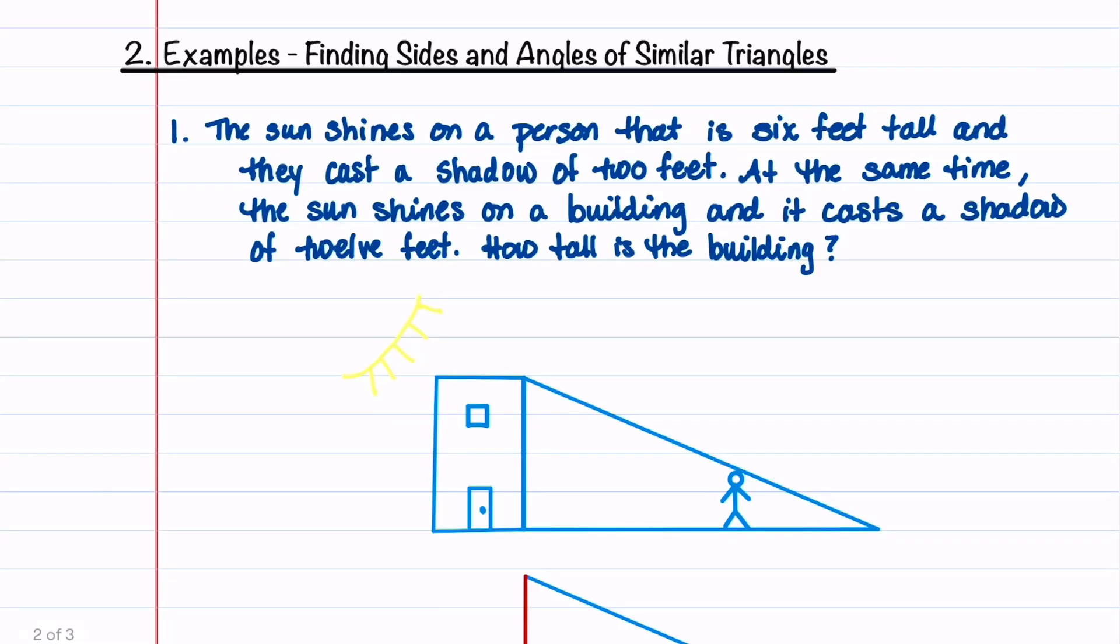Welcome to Understand the Math. Let's look at an example where the sun shines on a person that is 6 feet tall. So let's go ahead and underline that. And the person casts a shadow of 2 feet.